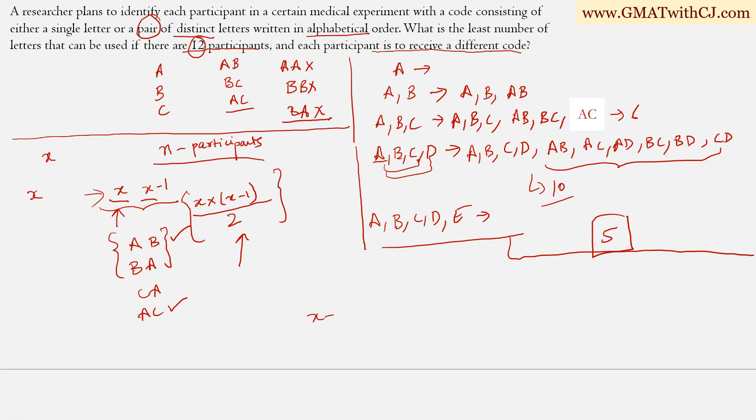So the total number of codes that we can generate out of X letters is X plus X into X minus one by two. And if we have N participants, this has to be greater than N. Now you can use this formula here. But I think since the number was pretty small, you need not get into this general formula, we can just directly see the pattern and see how many letters we are going to need.